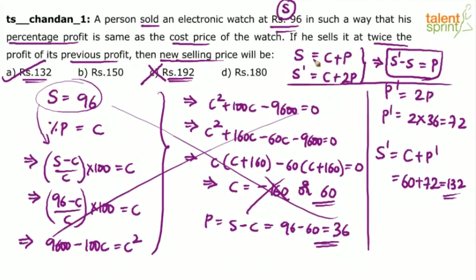If original profit is 36, the new profit is 2 into 36 equals 72. So new selling price is 60 plus 72 equals 132. Balanced. Now let's verify properly: what we need to check is that the percentage profit equals the cost price. Profit percentage is 36 by 60 into 100 equals 60. Cost price is also 60. They are equal, so option one is the correct answer.